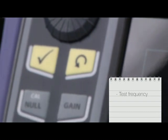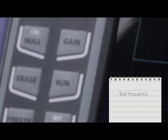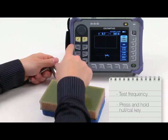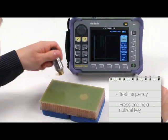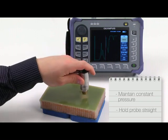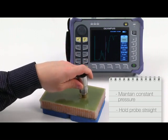The most critical parameter is the test frequency. Assuming you have a working MIA configuration, press and hold the NULL CAL key to enter the frequency calibration mode. Maintain the probe on the disbonded area while keeping a constant pressure. Hold the probe as straight as possible and aim for the center of the disbond defect.